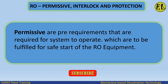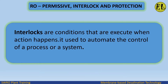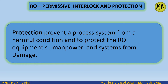Permissives are pre-requirements that are required for the system to operate, which must be fulfilled for a safe start of the RO equipment. Interlocks are conditions that are executed when an action happens, and are used to automate the control of a process or system. Protection prevents a process system from a harmful condition and protects the RO equipment, manpower, and systems from damage.